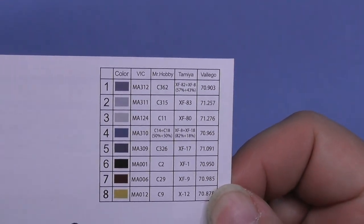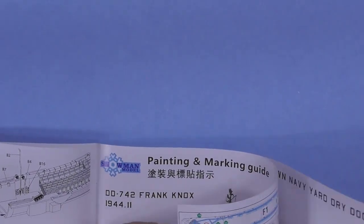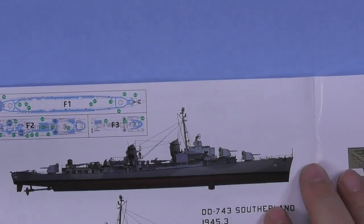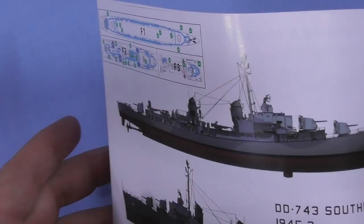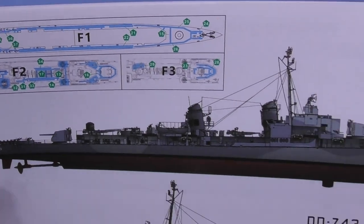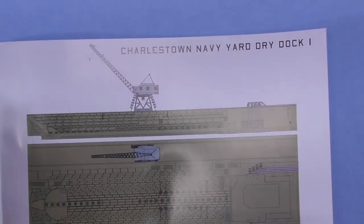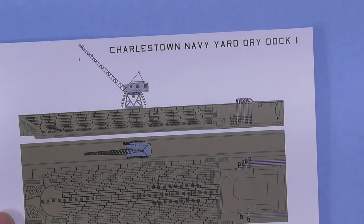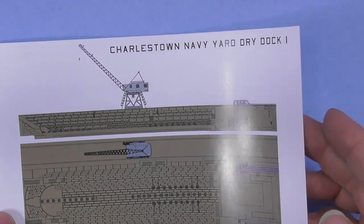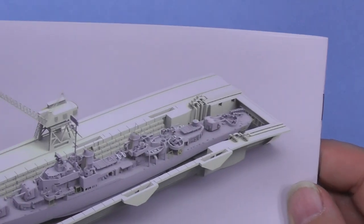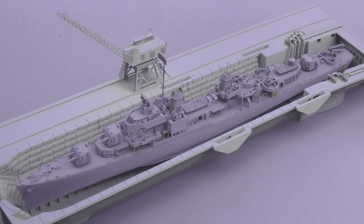So Mr. Hobby, Tamiya, Vallejo, and something called Vic. I gotta go back and check the other one. So here's where you're putting your decals, right there. And then there is what you're painting according to them, the dry dock, how it looks together. I guess you're not really trying to paint it, it's just how it looks. And then your ship sits neatly inside.